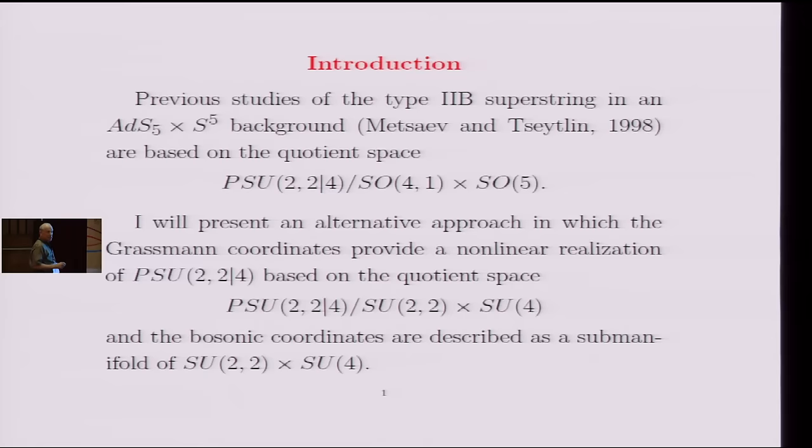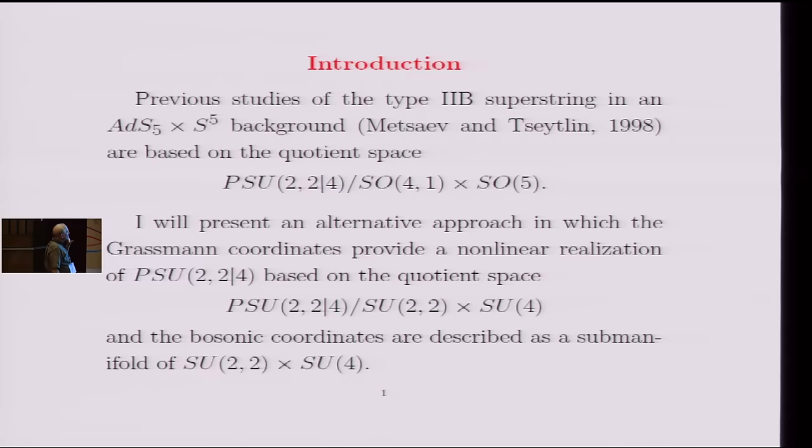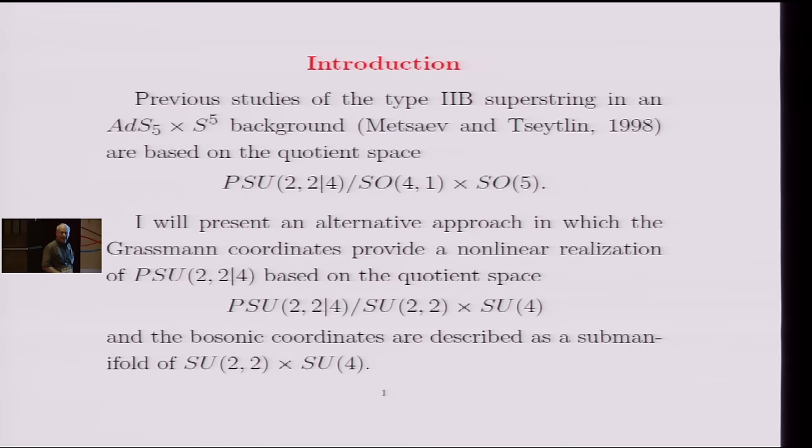So what I will do instead is to consider first just the Grassmann coordinates, the odd coordinates of this superspace geometry, and to describe them based on the coset space where you divide out the entire bosonic subgroup, which is SU(2,2) times SU(4). So that just leaves you the 32 fermionic directions of the supergeometry and describe them in terms of fermionic coordinates.